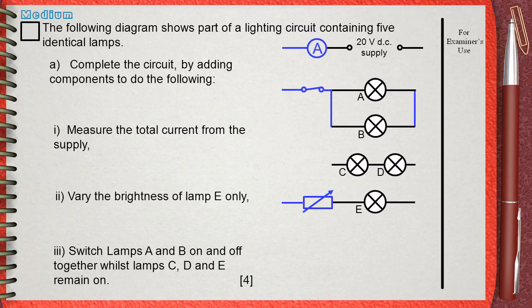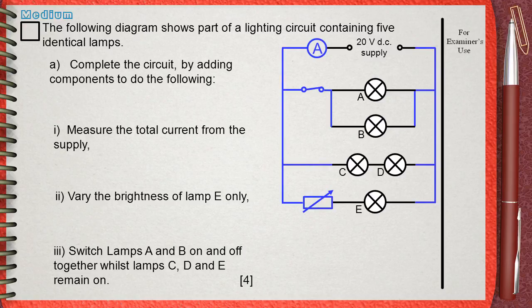The final step on the question is to close the circuit. We will identify each branch first, then we will connect them together to the power supply. Now our circuit is complete.